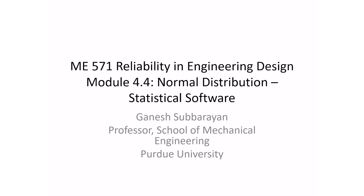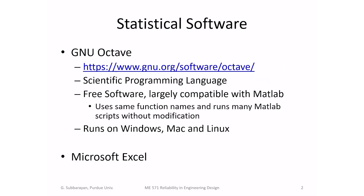There are two software we could potentially use, but I would primarily use one of the two because that's much more convenient. The two are GNU Octave, which will be our primary software, and Microsoft Excel. GNU Octave is a full-fledged scientific programming language. It's free software, largely compatible with MATLAB, uses the same function names, runs many MATLAB scripts without modification, and it's free. It runs on Windows, Mac, and Linux. So it's a great piece of software.